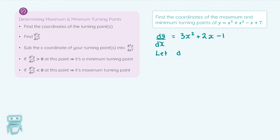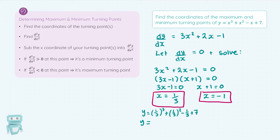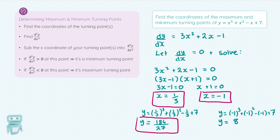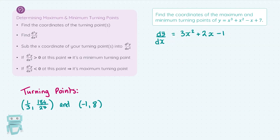Now, I'm at a point where I have the two turning points — we've seen this in a previous video. I have a turning point at the coordinates one third and 184 over 27, and minus one and eight. Now, I'm going to show you how we can determine which one is the maximum turning point and which one is the minimum turning point. We'll move on to step two, and I'm going to sub x equals one third and x equals minus one into my result for the second derivative.